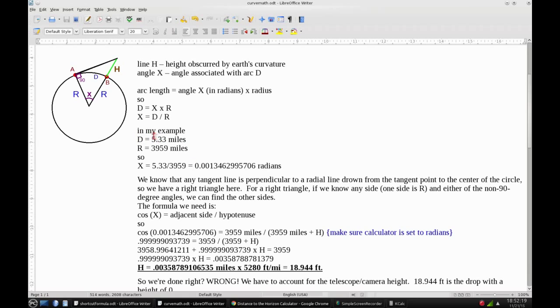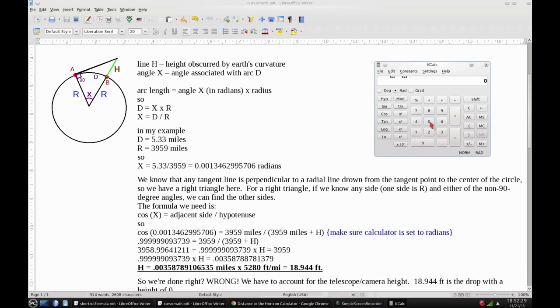Now when I did my experiment, my distance was 5.33 miles, so I'll use that for the calculations. So here we have X equals 5.33 divided by 3,959. Let's do that. And you get this number, and that's in radians.